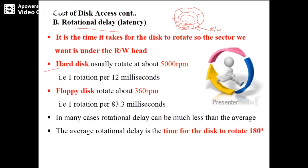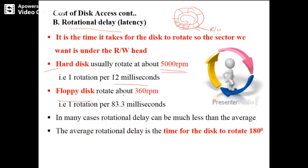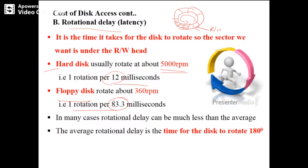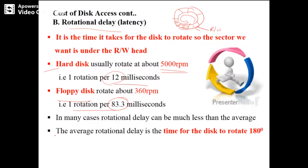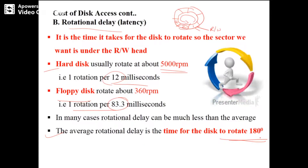For a hard disk, it usually rotates at about 500 RPM, which is one rotation per 12 milliseconds. For a floppy disk, it is 360 RPM, which is one rotation per 83.3 milliseconds. The rotational delay is much larger for a floppy disk compared to a hard disk. The average rotational delay is the time for the disk to rotate 180 degrees.